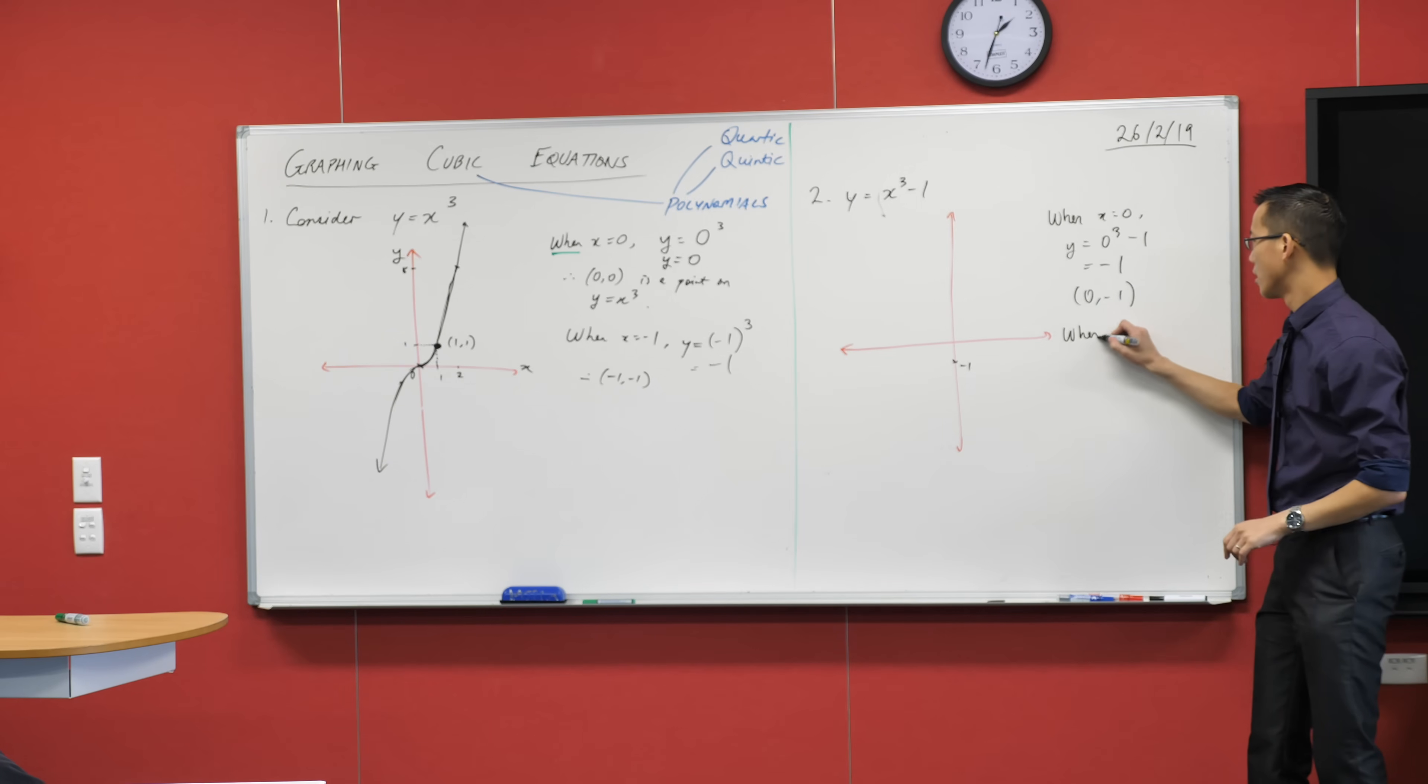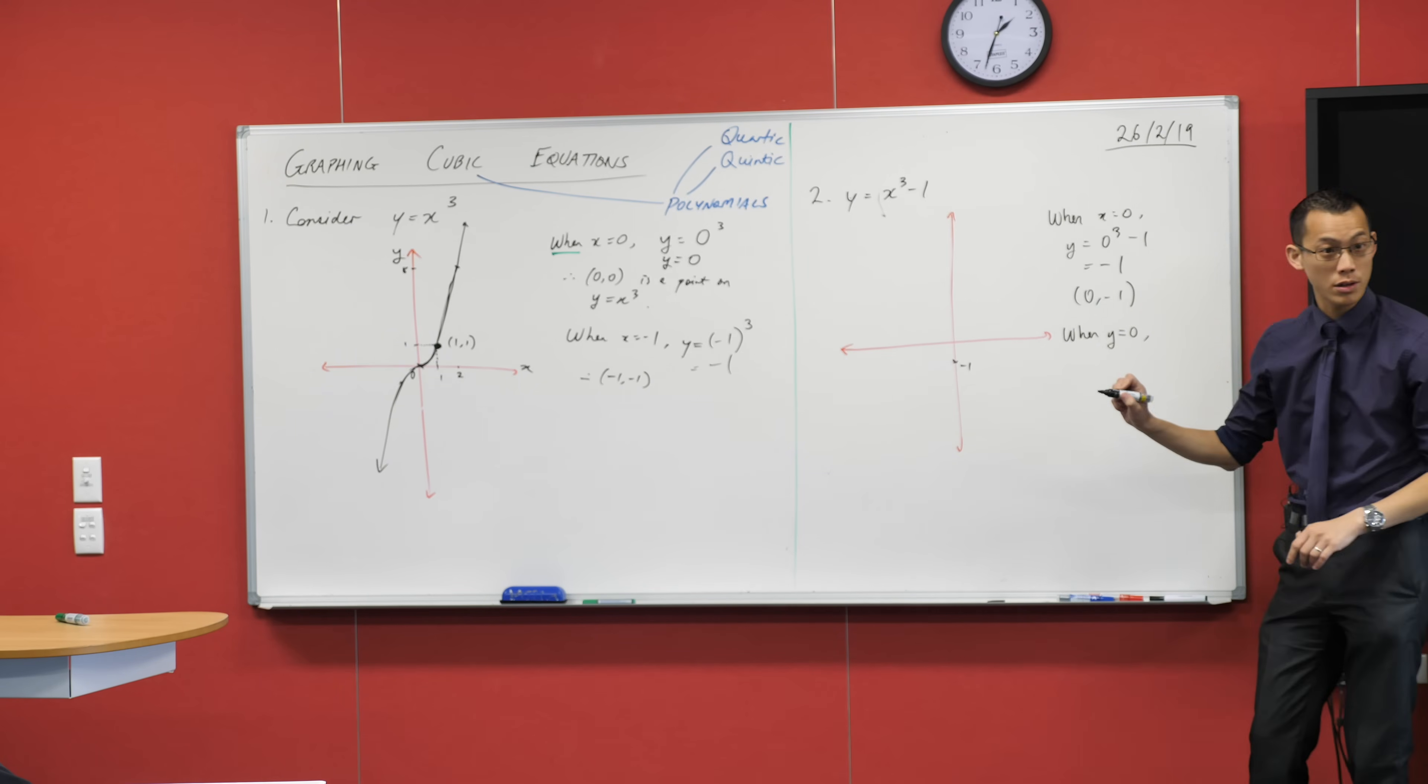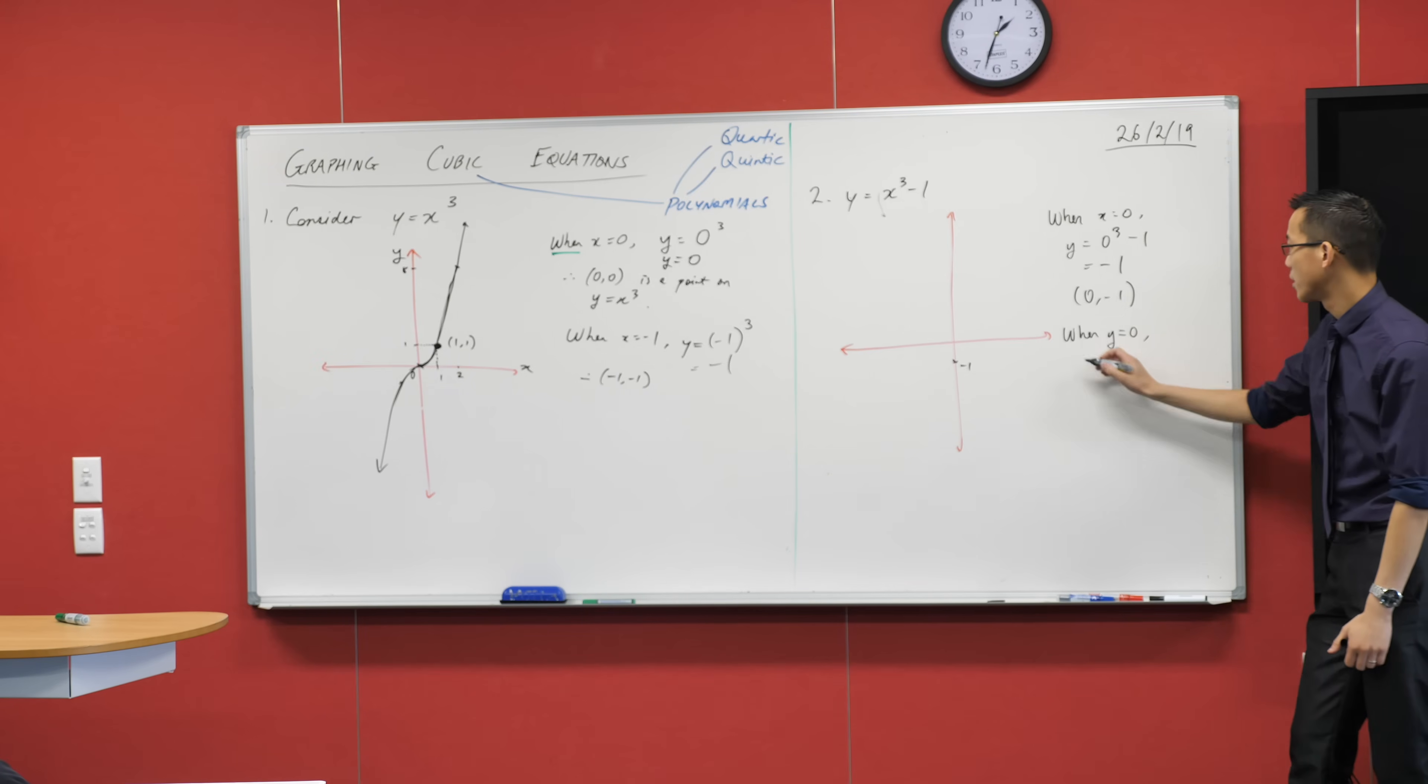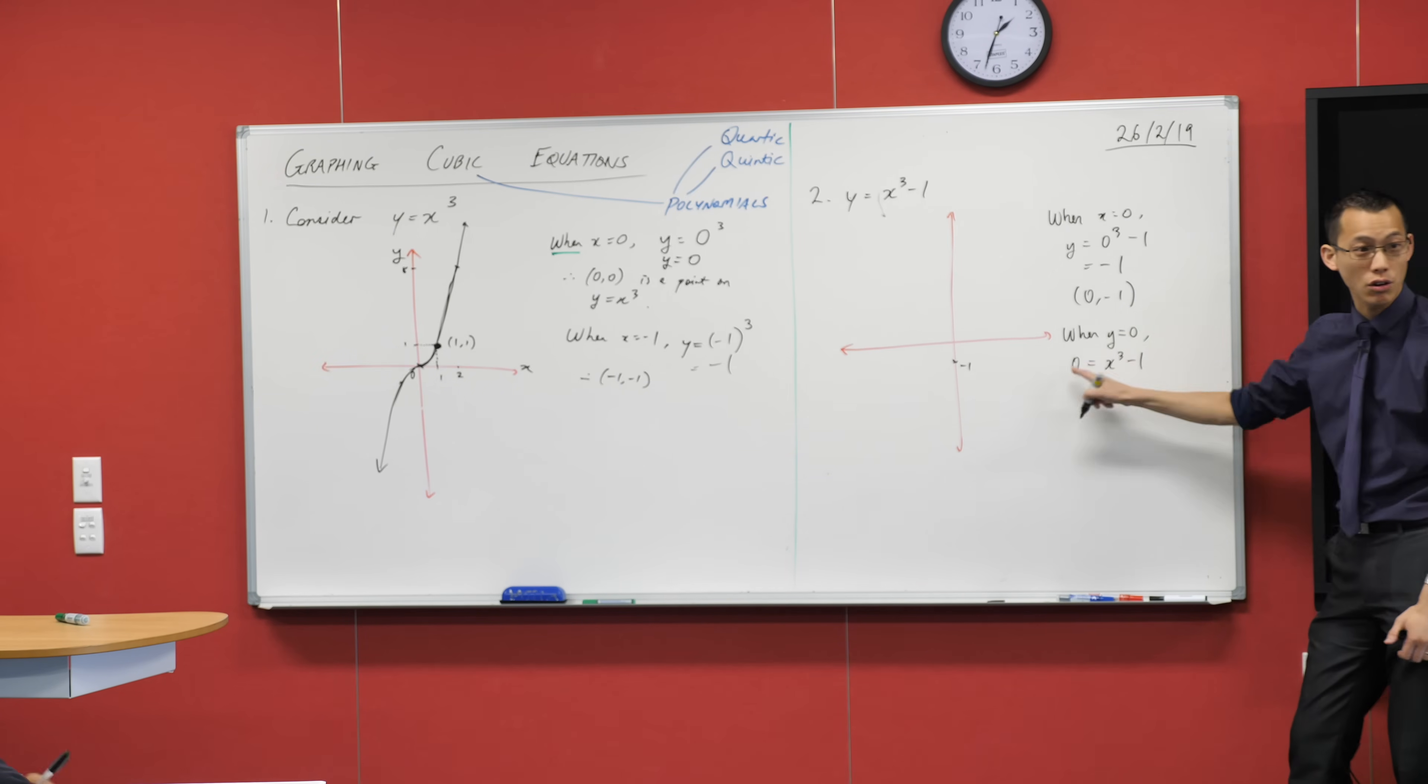So when y equals 0, I'm just going to do the same substitution that I did before. I'm going to say 0 equals x cubed minus 1. You can see it's gone into the y, right?